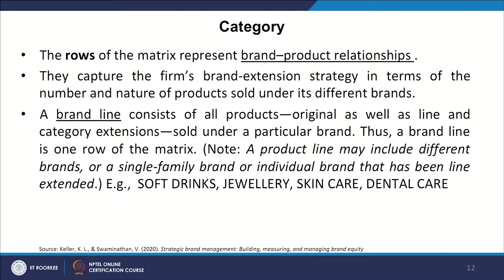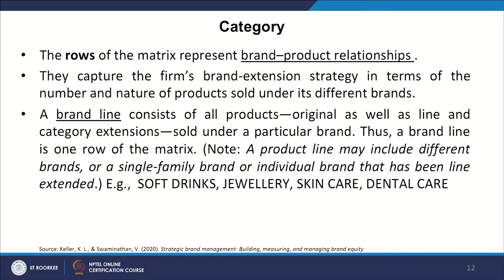The rows of the matrix represent brand product relationships. They capture the firm's brand extension strategy in terms of the number and the nature of the products sold under its different brands — one name and probably different products, may be related to each other, may be complementary, but belonging to different lines in terms of product. For example, a computer company puts up a computer and a printer and carries the same brand name — those products can be different in terms of their line but same in terms of brand name.